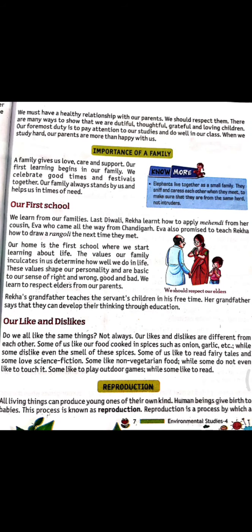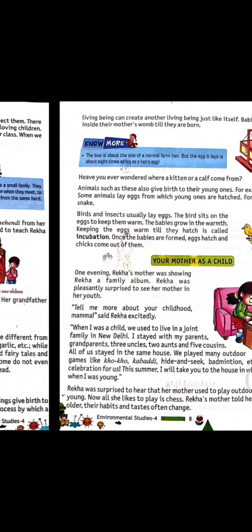Now we will read about reproduction. All living things can produce young ones of their own kind. Human beings give birth to a baby — this process is known as reproduction. This is the process to give birth to babies. Reproduction is a process by which a living being can create another living being just like itself. Babies grow and develop inside their mother's womb till they are born.